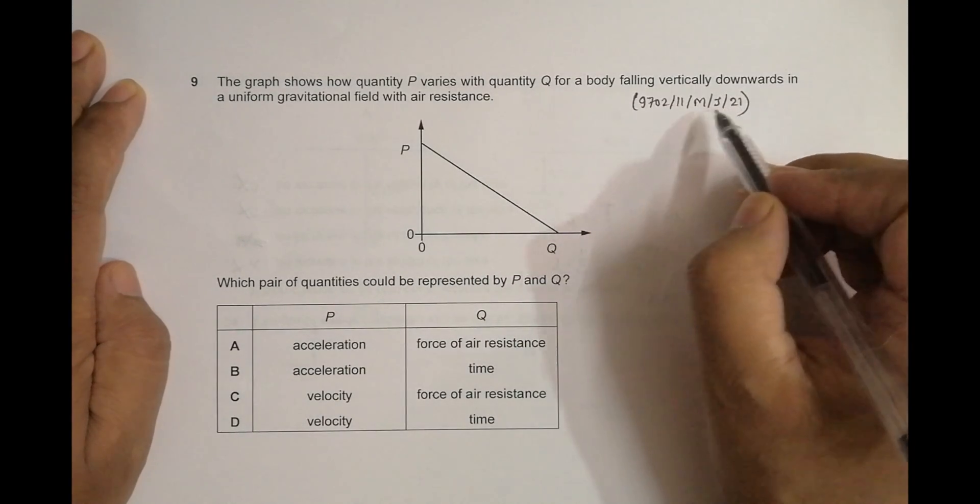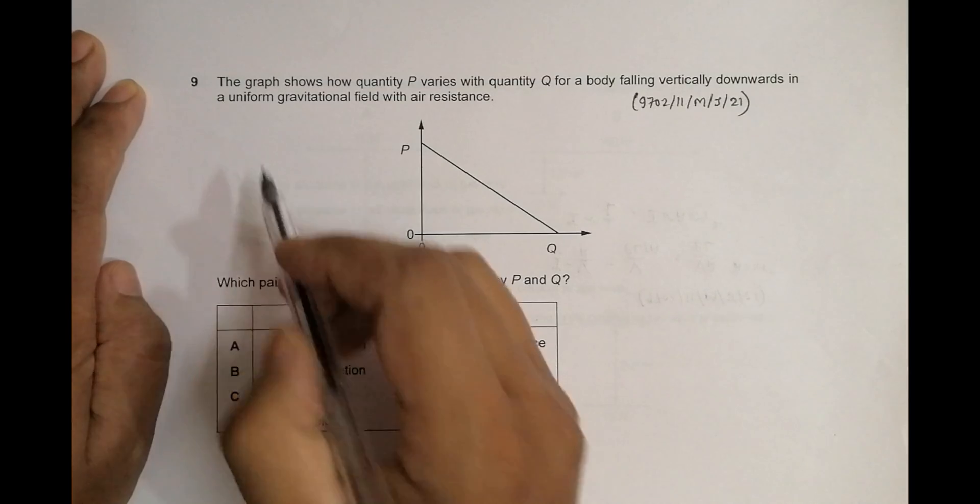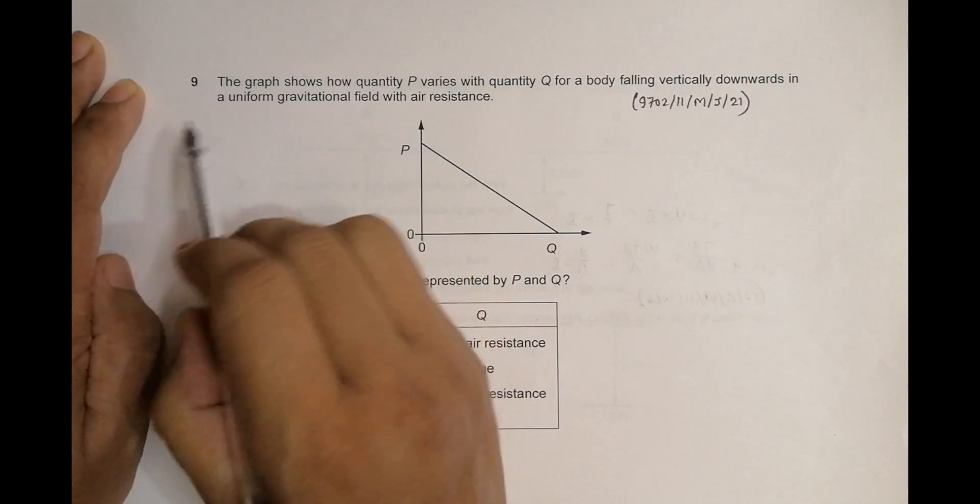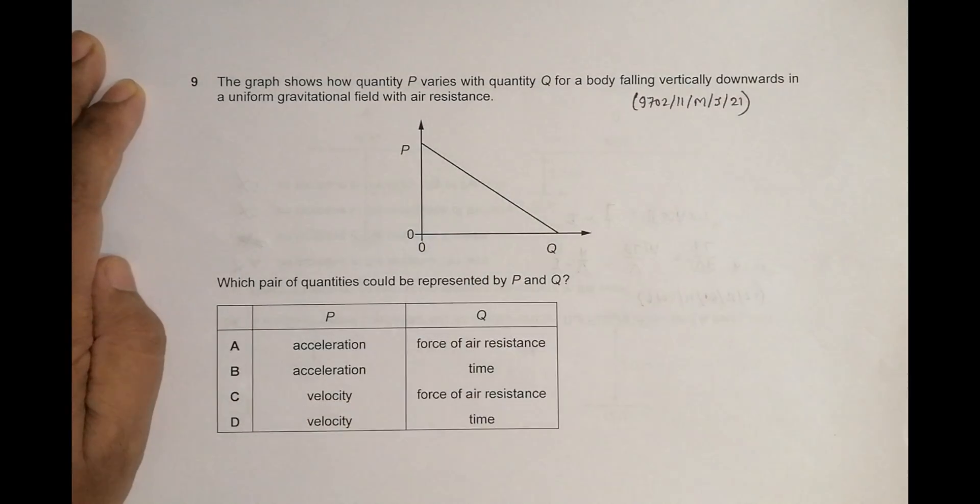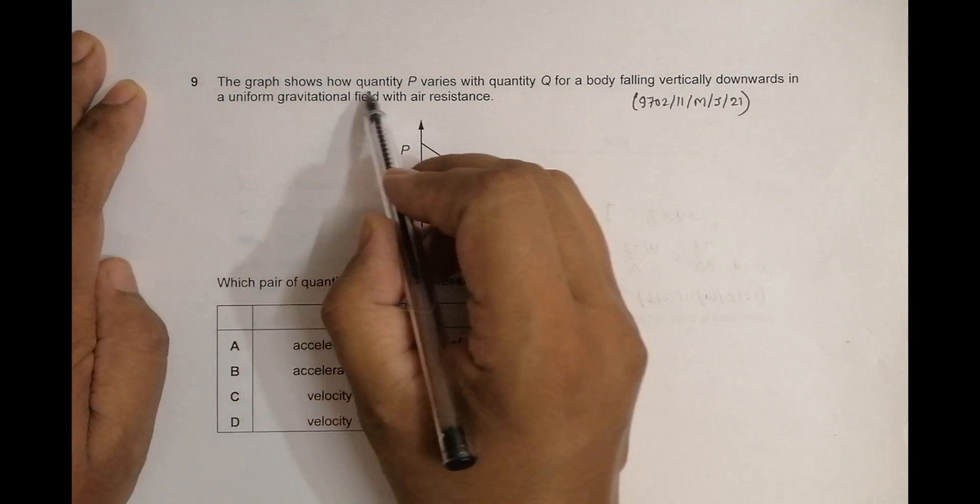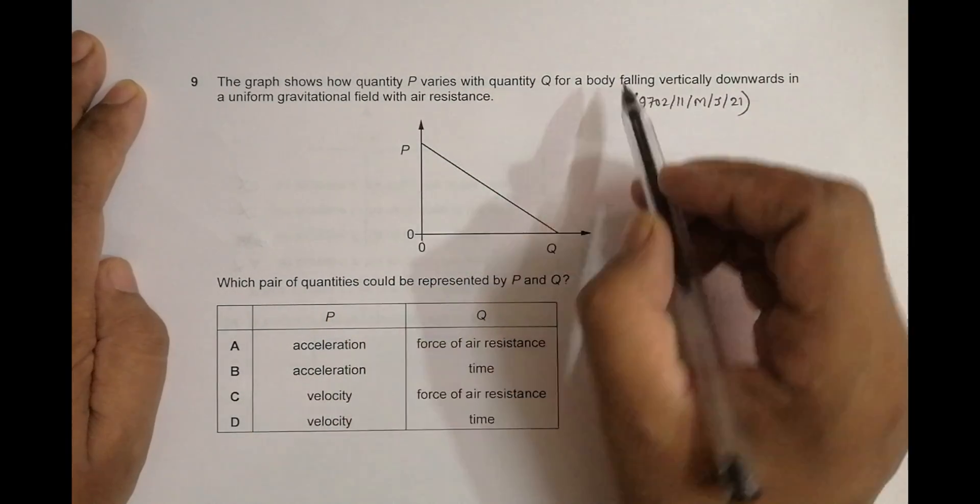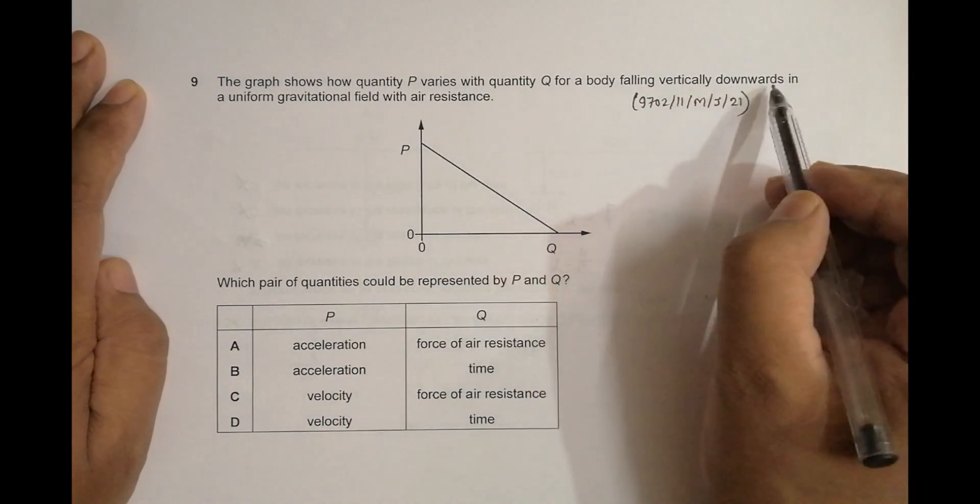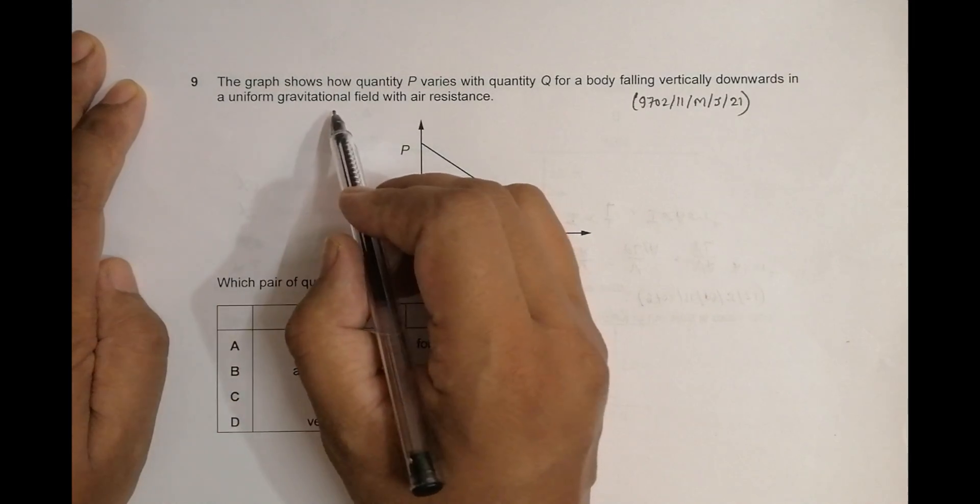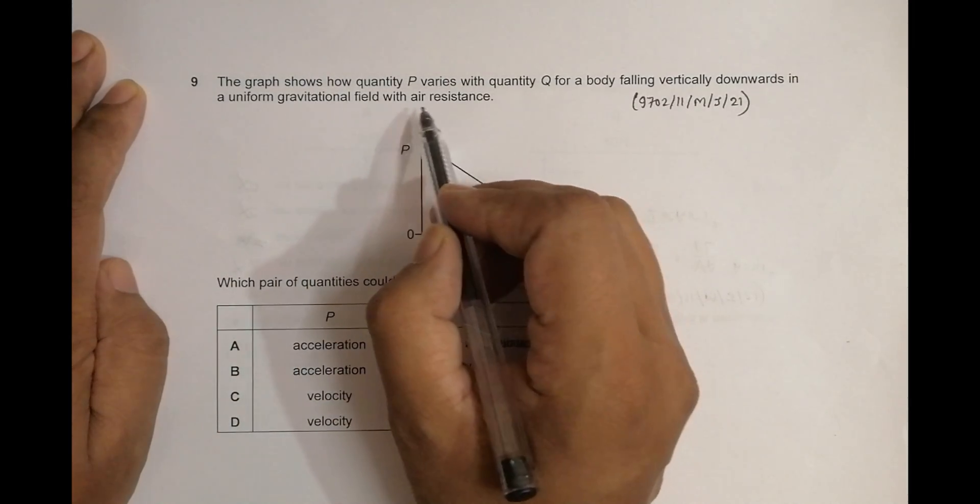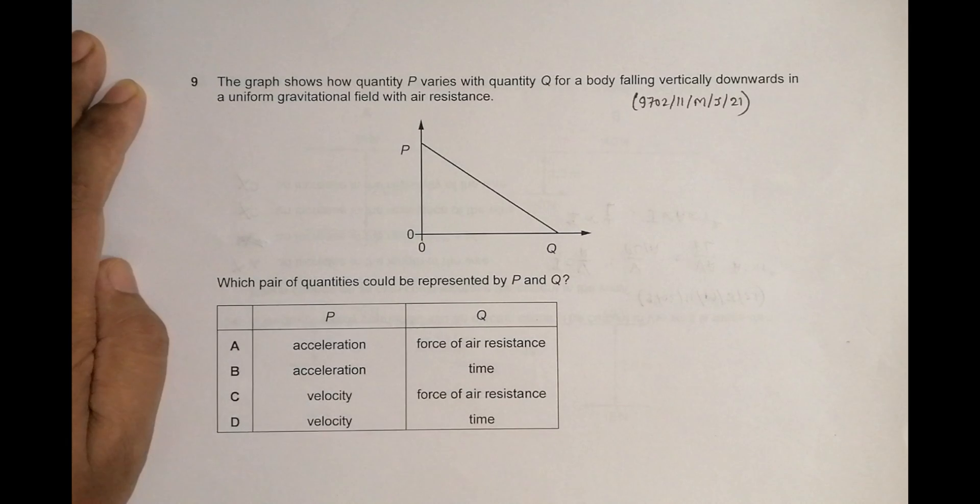Okay, hello folks. This is a 2021 major paper 1, question number 9. This concerns the chapter of dynamics, or forces. The graph shows how quantity P varies with quantity Q for a body falling vertically downward in a uniform gravitational field, with air resistance. What pair of quantities could be represented by P and Q?